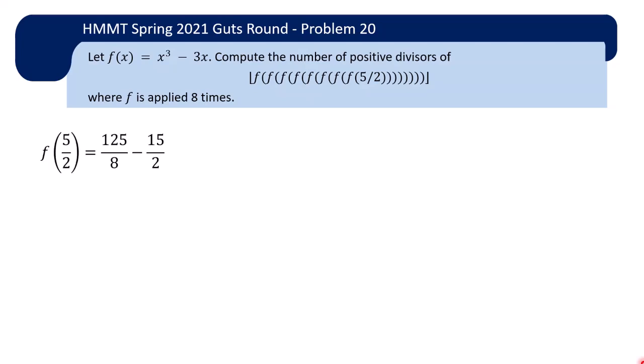So, f of 5 over 2, okay, it's x cubed minus 3x, so it's 125 over 8 minus 15 over 2 and, okay, I can convert it to a common denominator and then so now I can subtract and get 65 over 8.